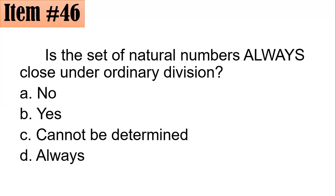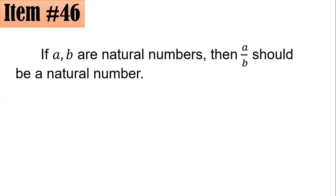Speaking about the closure property: if you operate any two natural numbers using division, will it always result in a natural number? That is, for any natural numbers A and B, is A over B always a natural number? That would be the case only if the set of natural numbers is closed under division.